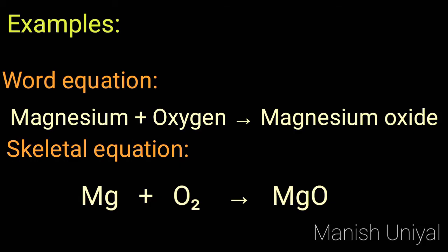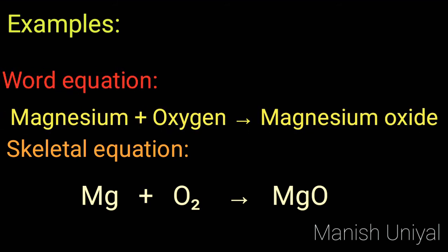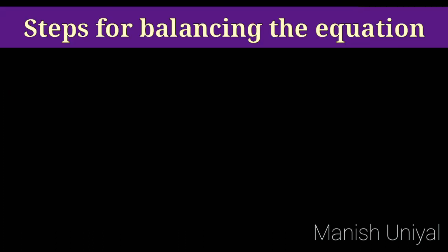For example, when magnesium burns in oxygen to give magnesium oxide, we can write the word equation: magnesium plus oxygen gives magnesium oxide. The skeletal equation is: Mg + O₂ → MgO. Steps for balancing the equation — first, we write the skeletal equation: Mg + O₂ → MgO.